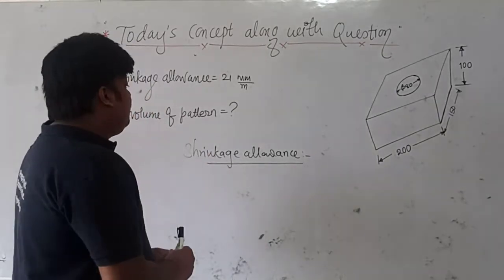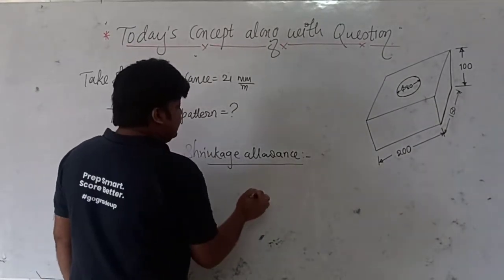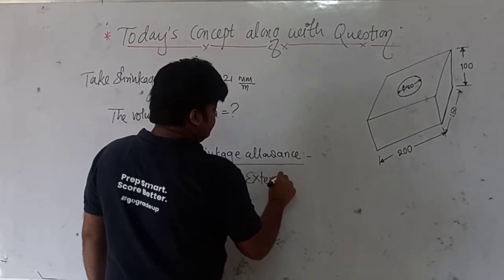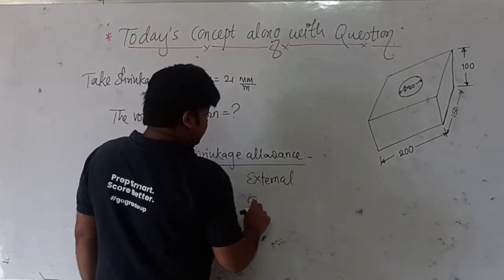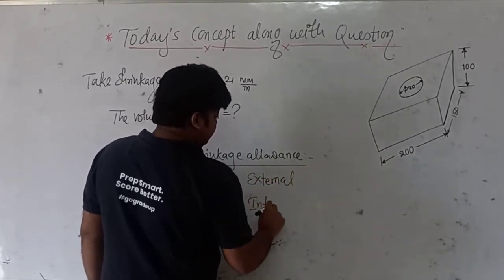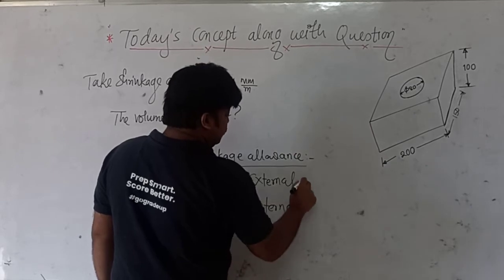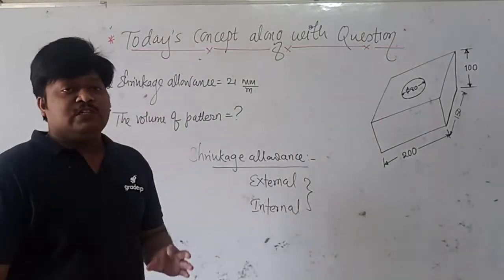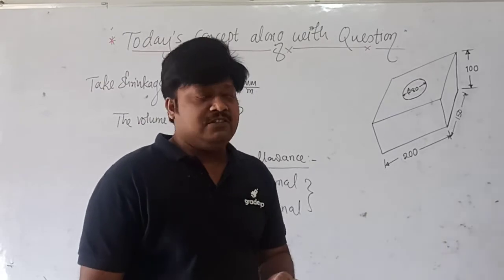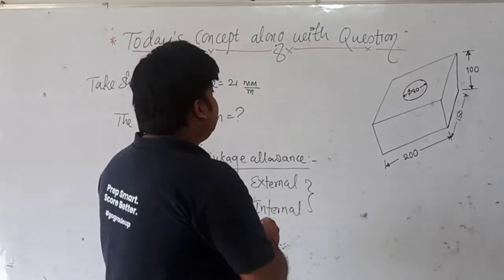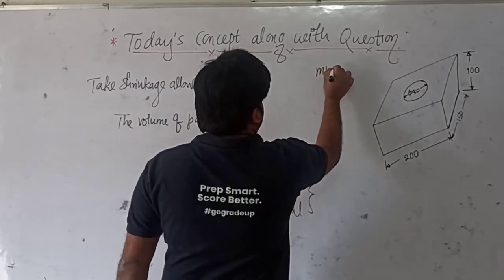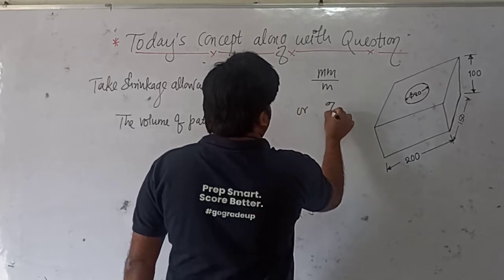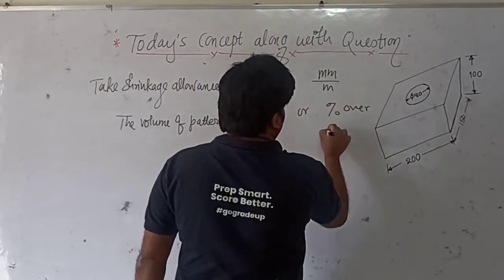When we are applying the shrinkage allowance, it applies to both the external dimension as well as the internal dimension. Please remember that the shrinkage allowance may be expressed in terms of mm per meter or in terms of percentage over dimension.